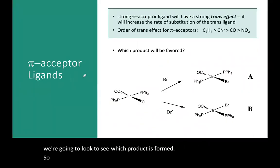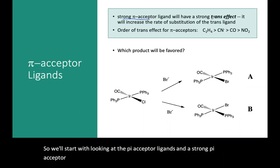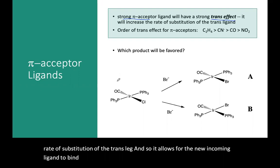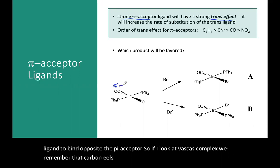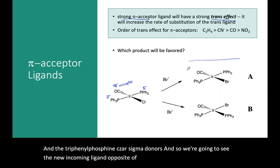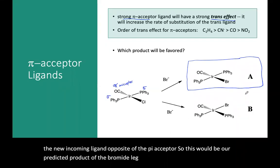We're going to start by looking at pi acceptor ligands. A strong pi acceptor ligand will have what's called a strong trans effect. It increases the rate of substitution of the trans ligand, so it allows the new incoming ligand to bind opposite the pi acceptor. Looking at Vaska's complex, carbonyls are pi acceptors and the triphenylphosphines are sigma donors, so we'll see the new incoming ligand bind opposite the pi acceptor. This gives us the predicted product with the bromide ligand coming in trans to the carbonyl.